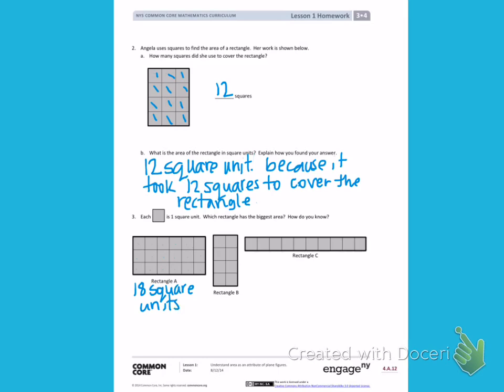Rectangle B has 1, 2, 3, 4, 5, 6, 7, 8 squares that cover the rectangle. So it is 8 square units.